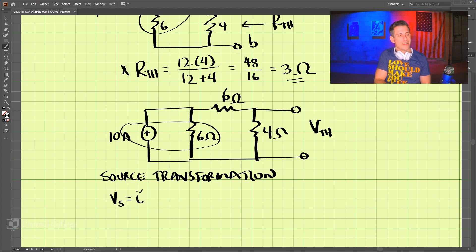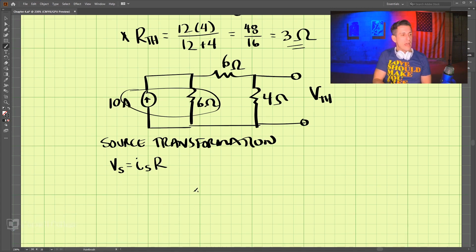And remember, Vs equals Is times R. So we have our current source, which is 10 amps, and we have our resistance, which is 6. That makes our voltage source 60 volts.